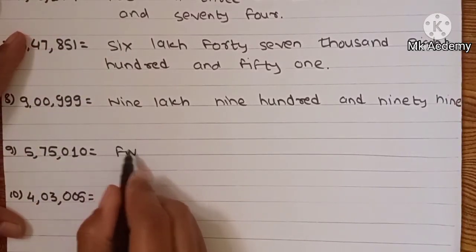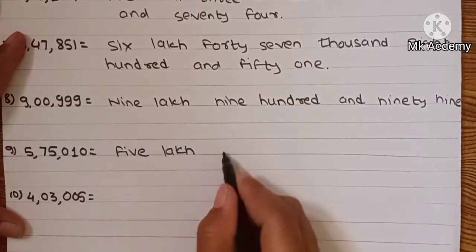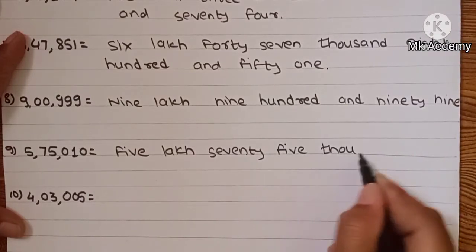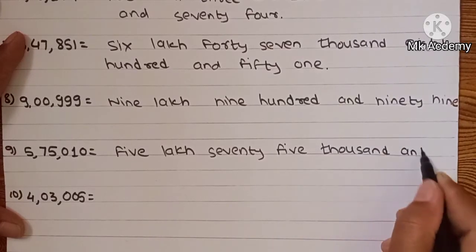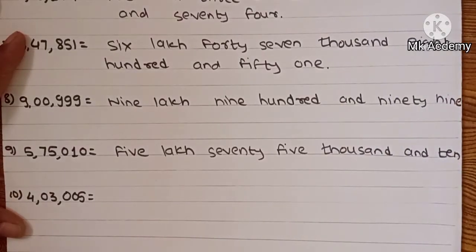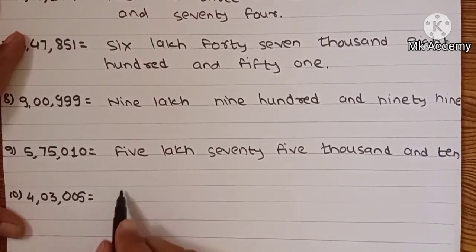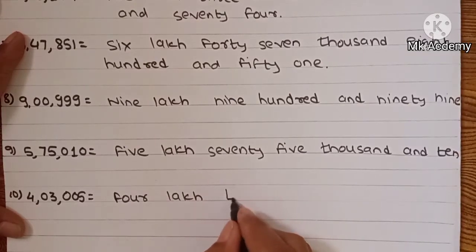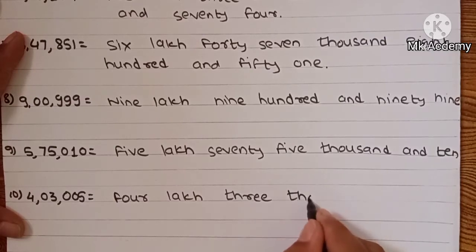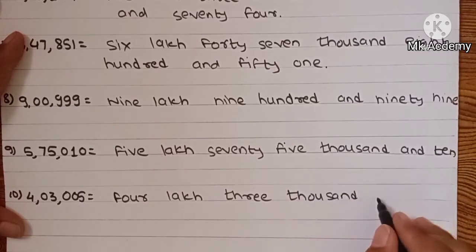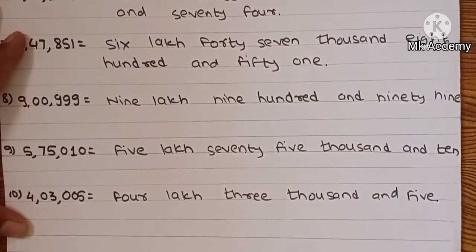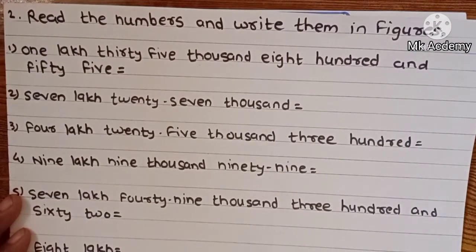Example number 10: 4,03,005 — four lakh three thousand and five.